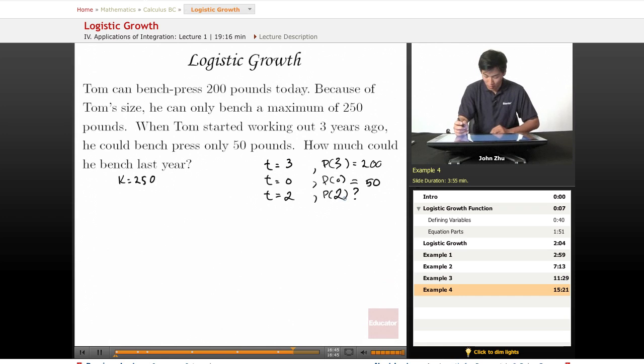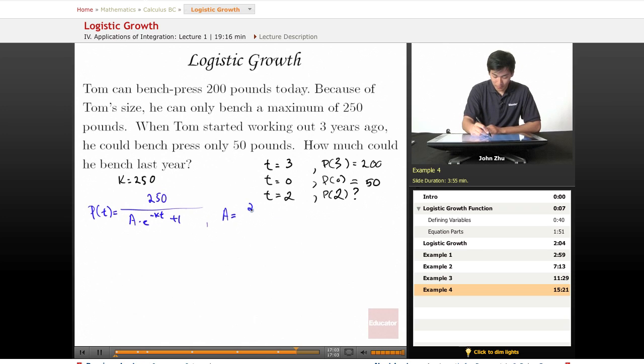So then we go ahead and try to plug in our growth model. p of t equals carrying capacity 250 pounds over a times e to the negative kt plus 1. Well, a here equals 250 minus 50, which was what he started with initial condition, over 50. And that equals 4.